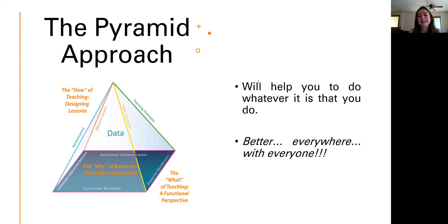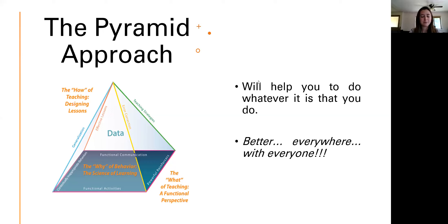Two areas of behavior generally demand the attention of people working and living with learners with special abilities. The first one is the presence of challenging behavior such as hitting, screaming, and biting. The second one is the absence of important key behaviors — skill deficits like functional communication, social skills, and more. Now if we go to the top of the pyramid: the how of teaching.